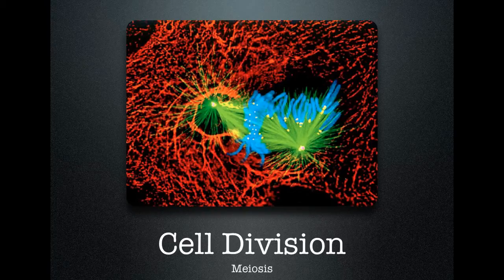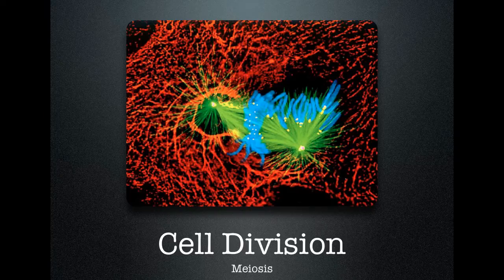Morning, everybody. It's 6:30 in the morning, so it must be another edition of the Lab 207 webcast. My name is Mr. Kite. I'll be hanging out with you today as we continue on in our series on cell division. The important topic for the day is meiosis. This video would be good for AP Bio and regular bio alike, so if you've got some friends working on meiosis, go ahead and pass it along.